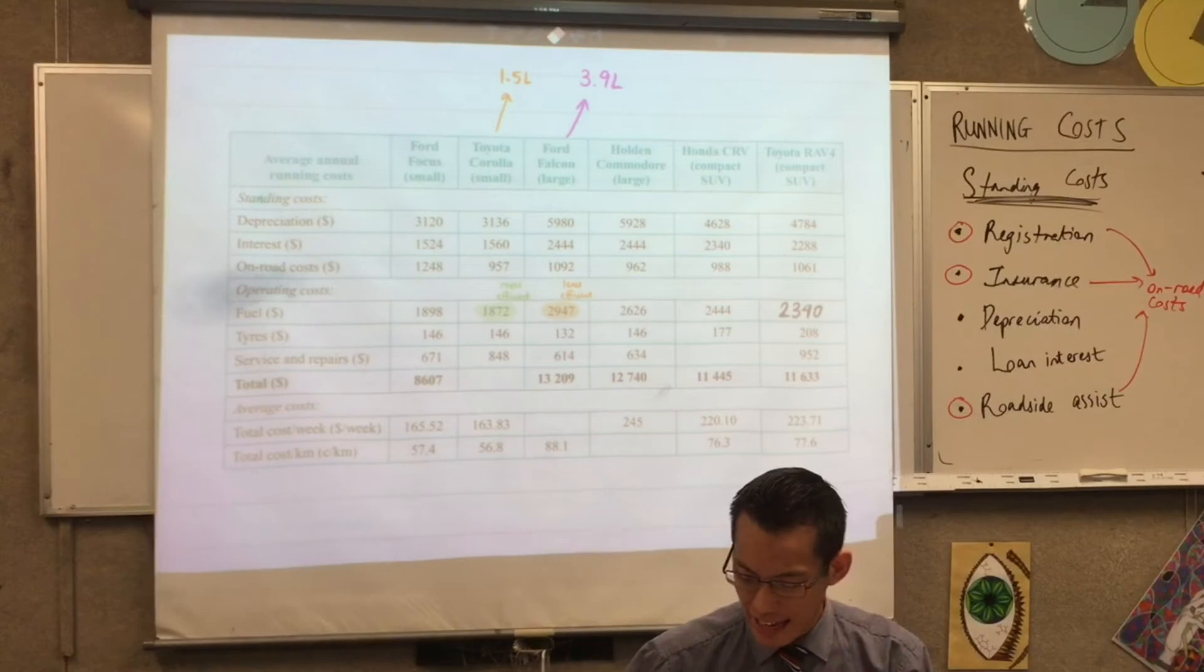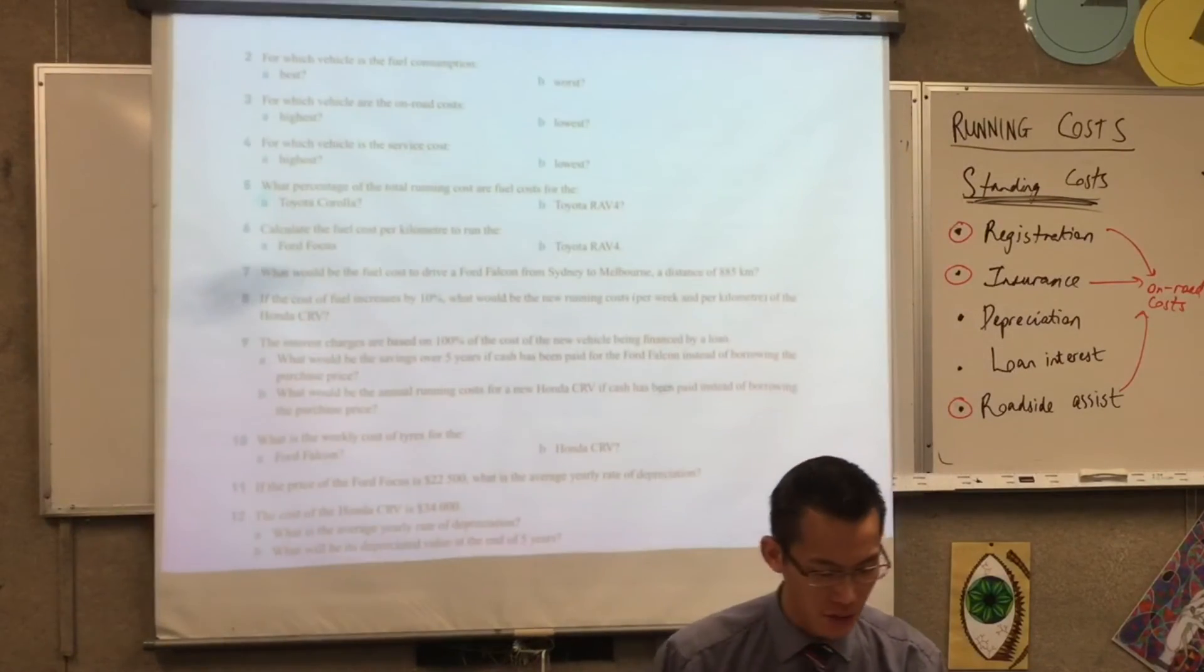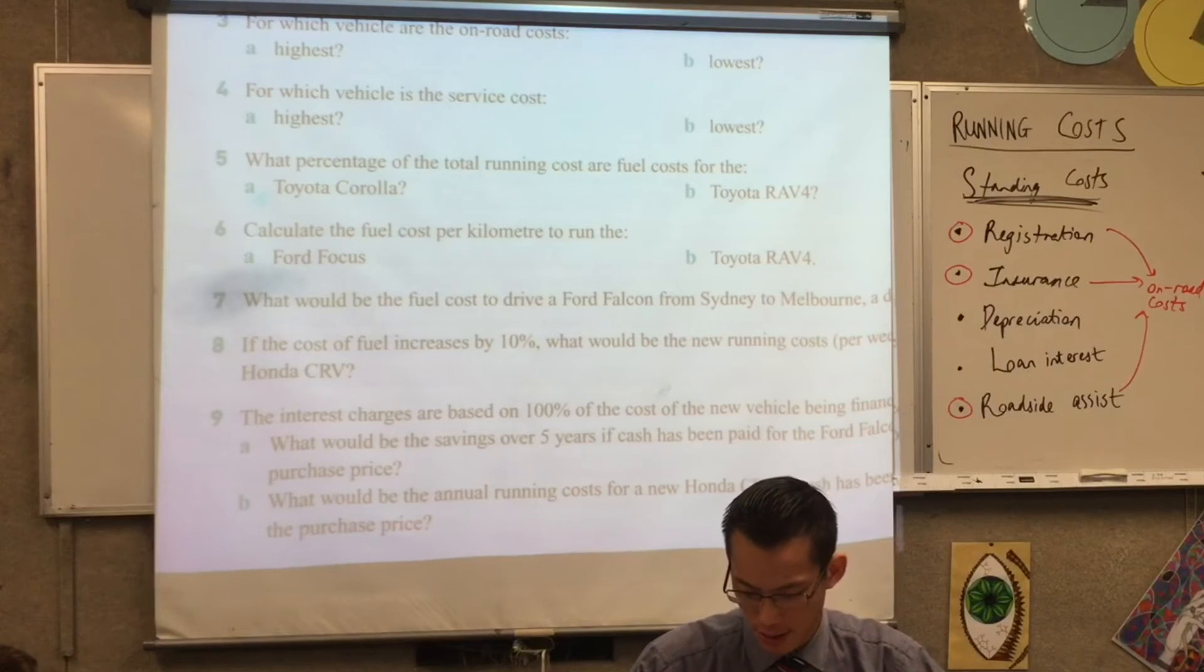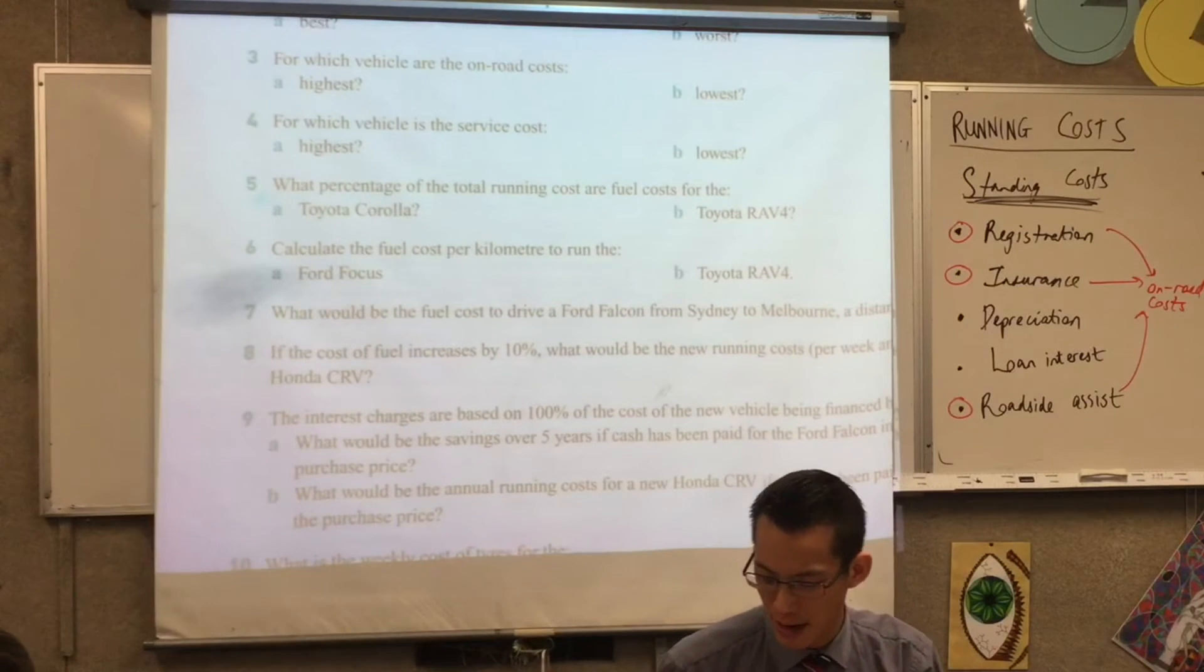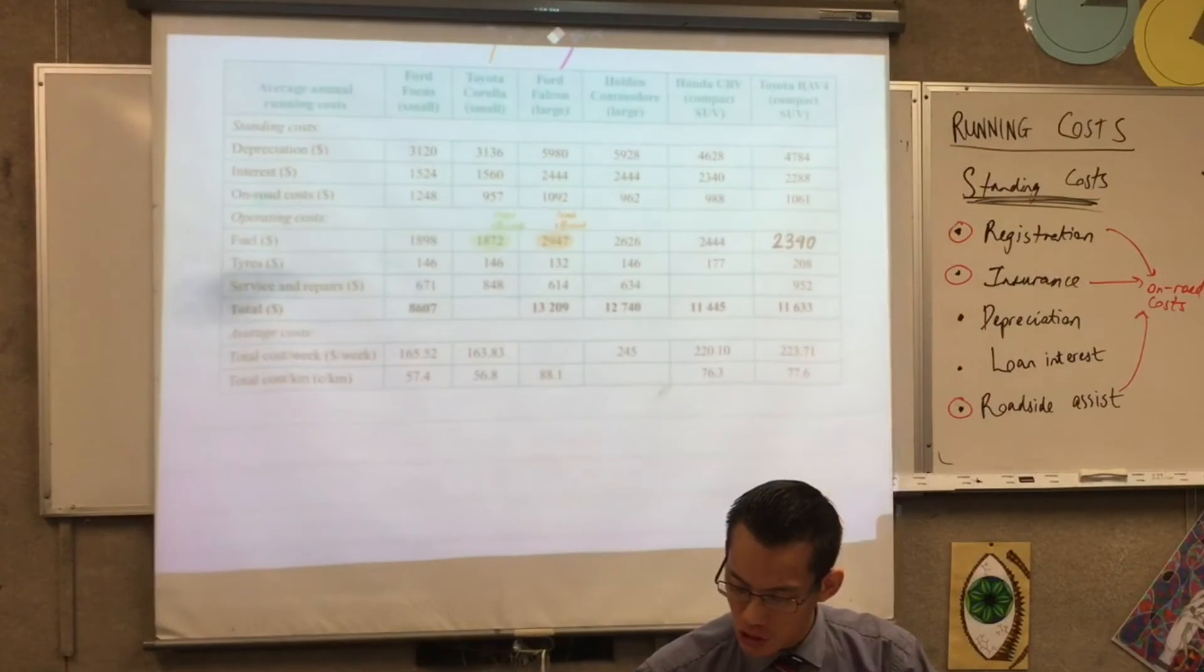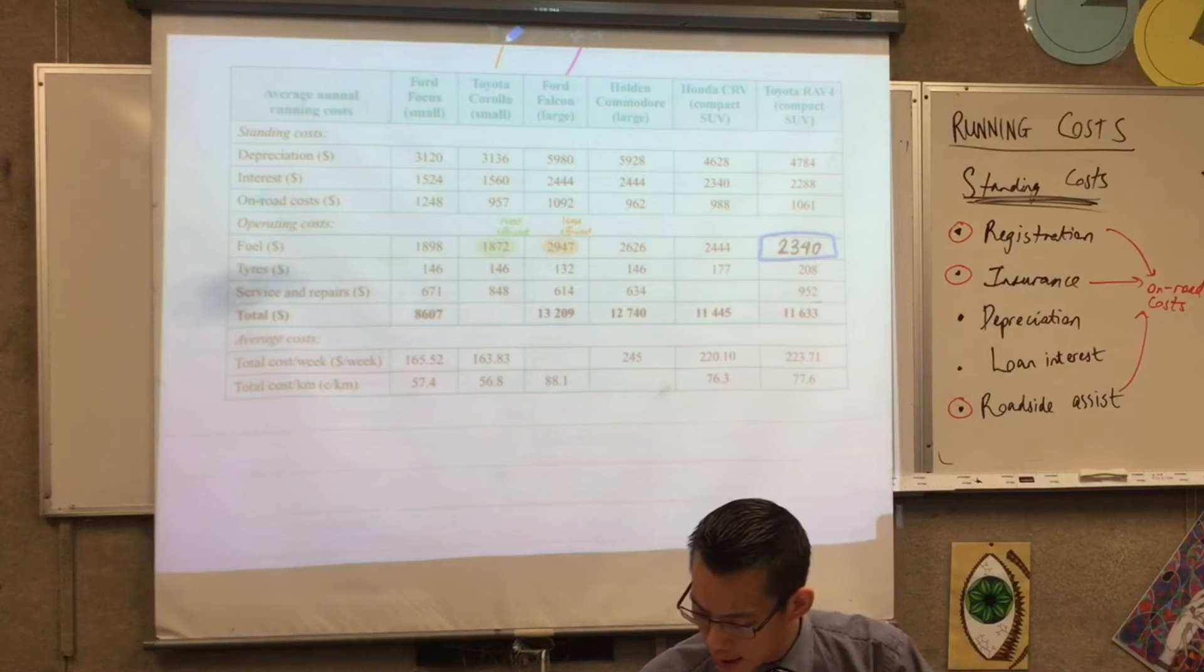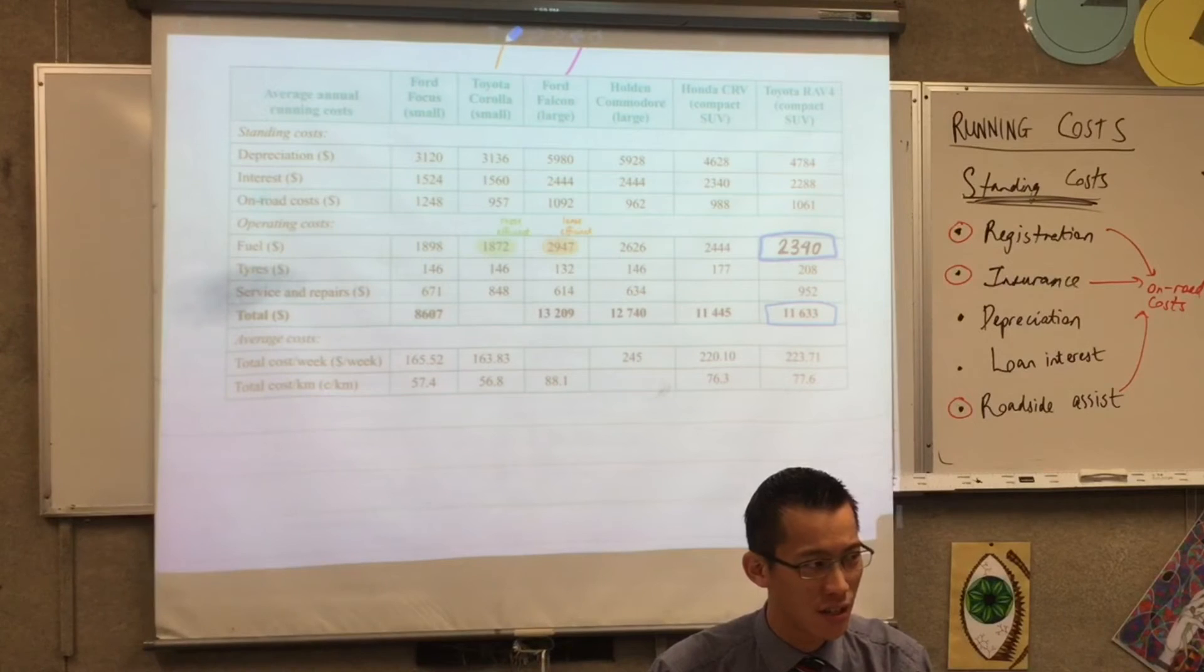That was question 2. The next one I want us to look at is 5B. What percentage of the total running costs are fuel costs? This is really good - these percentages. This is what we're looking at in the starter questions. Let's do the Toyota RAV4. Have a look - which column are we looking at for the RAV4? That's this one over on the end that we filled in. So here are the petrol costs and here is the total costs.